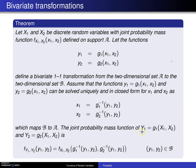The joint probability mass function of y1 equals g1 of x1, x2 and y2 equals g2 of x1, x2 is simply the joint probability mass function of x1, x2 evaluated at g1 inverse and g2 inverse, for every y1 and y2 an element of script B. This will be illustrated in the example that follows.